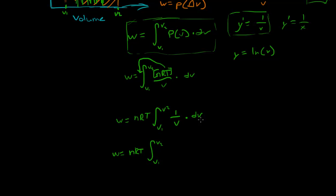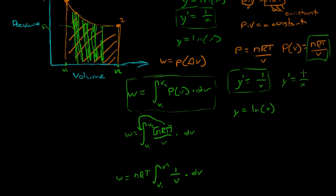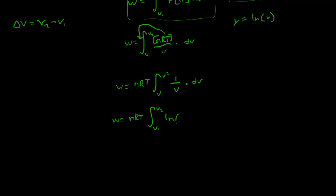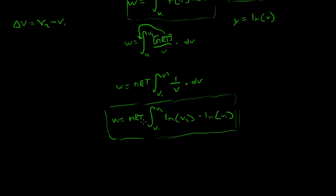So if we knew the values, we could plug them in. For example, if this whole constant nRT came out to 6, it would be 6 times ln of volume two minus ln of volume one. We can also use logarithm rules — since log a plus log b equals log of a times b — to rewrite ln(V2) minus ln(V1) as ln(V2 divided by V1).